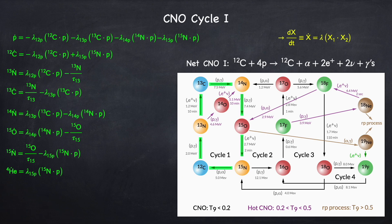If you wanted to, we could even get more accurate by including the hot CNO cycle. And that's it — that's the full set of equations for cycle one. If you wanted to do the whole CNO cycle, you just continue on with the same process for all of the other sub-cycles.